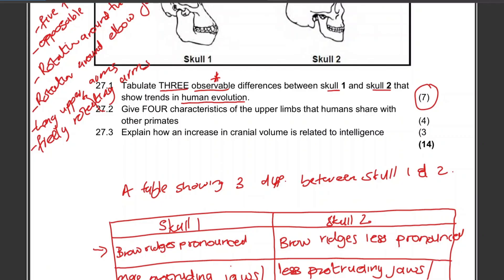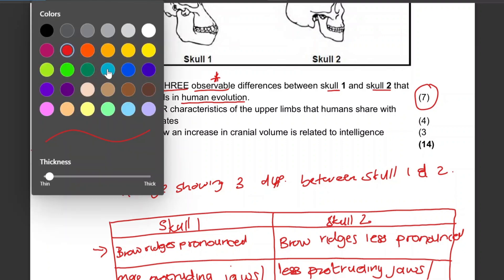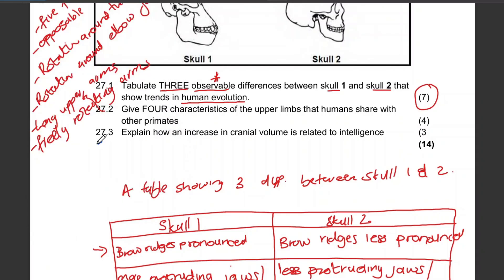Explain how an increase in cranial volume is related to intelligence, for three marks. Since the cranium houses the brain, a larger cranial volume indicates a larger brain or more brain cells, which suggests greater intelligence.